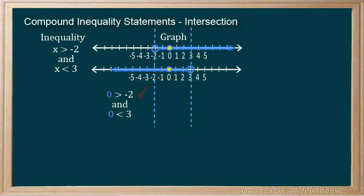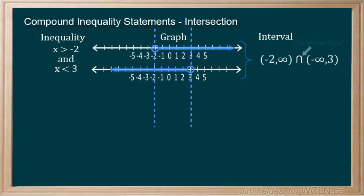Any value 2 or less or 3 or more would not satisfy both inequalities and thus would not be part of the solution. In interval notation we can summarize it like this. The symbol shown here denotes intersection.